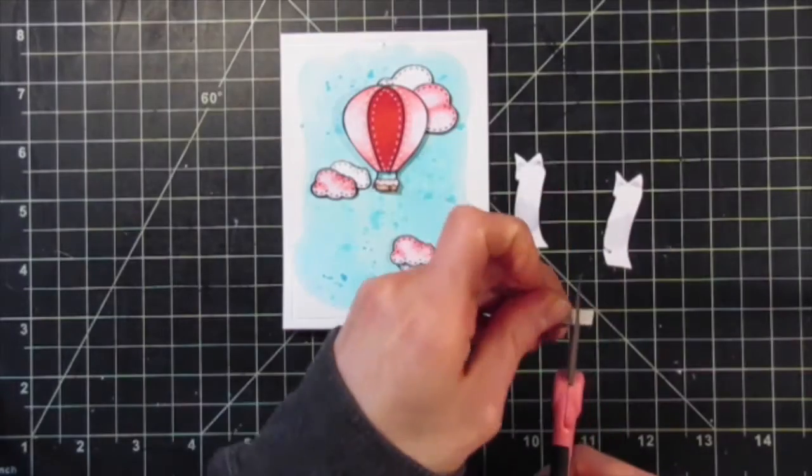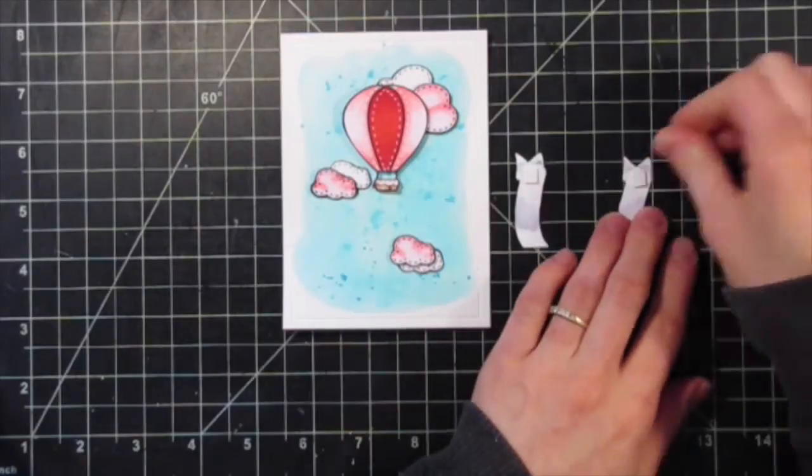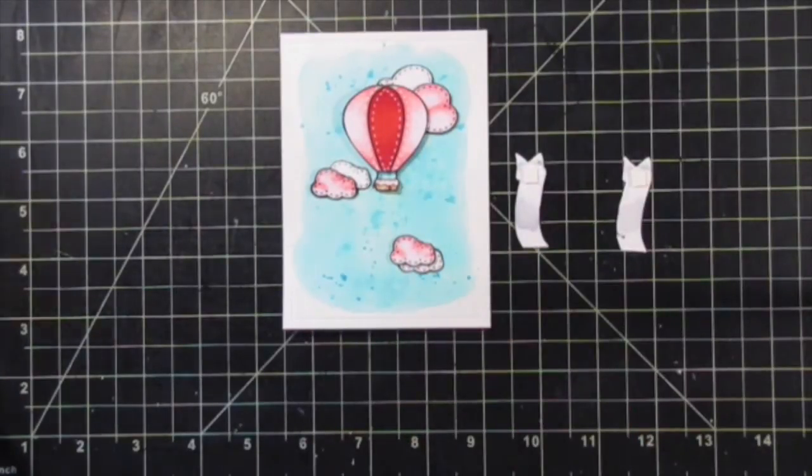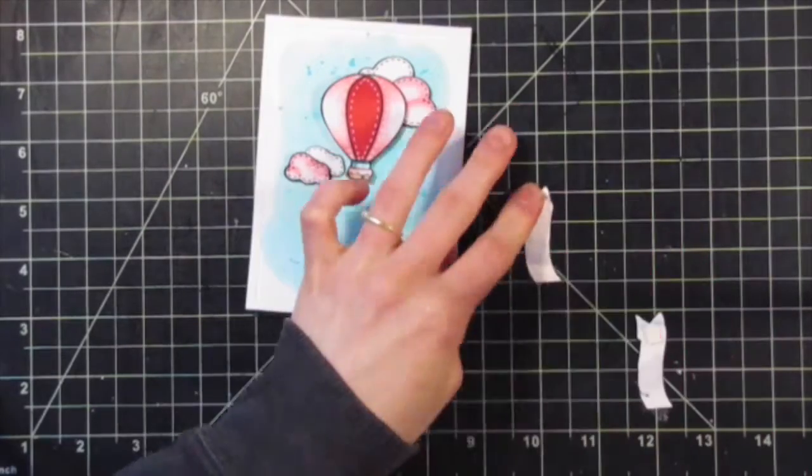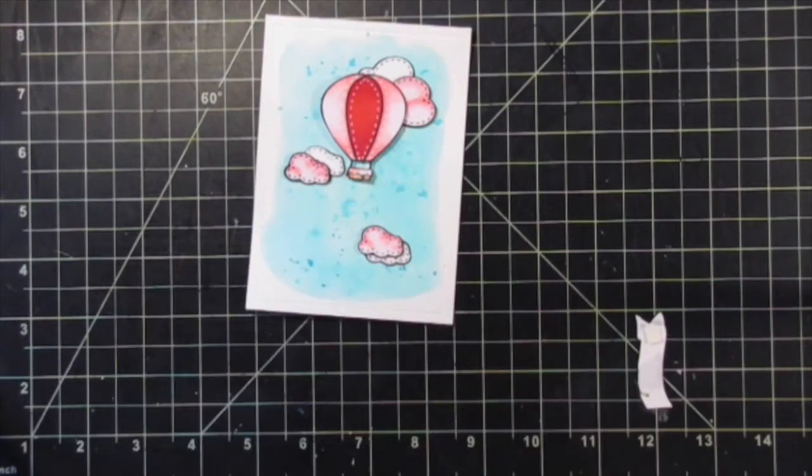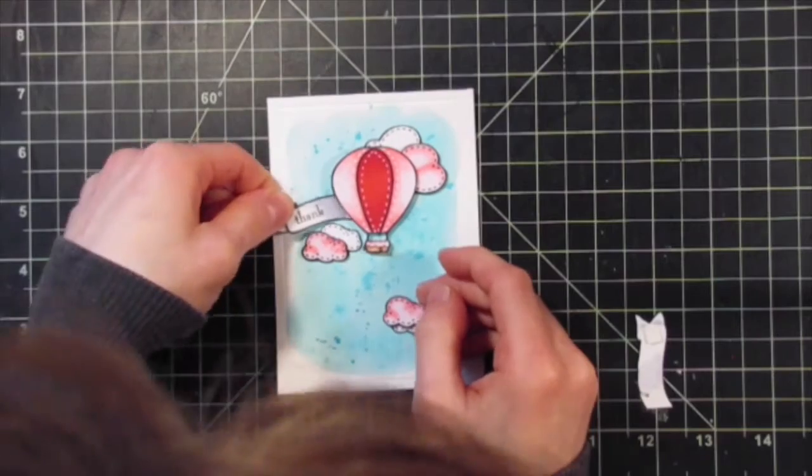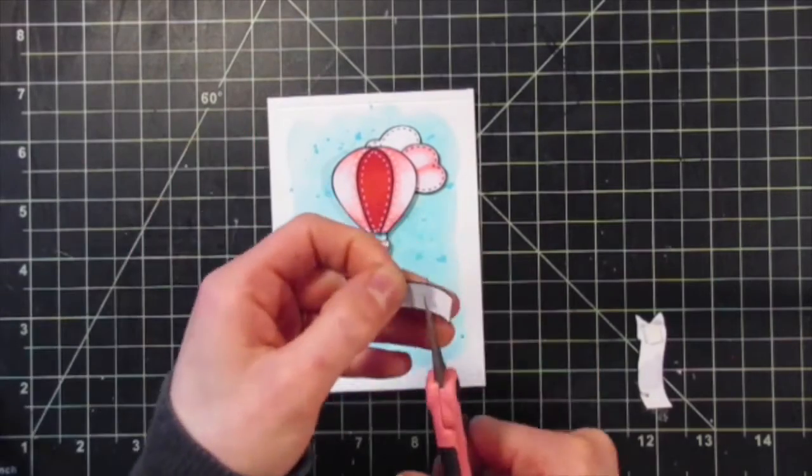I attached the hot air balloon, and now I'm adding on the little banner pieces. I put a little bit of foam tape on the end so they'll stick up more, and some regular adhesive to the bottom so they will lay flat.